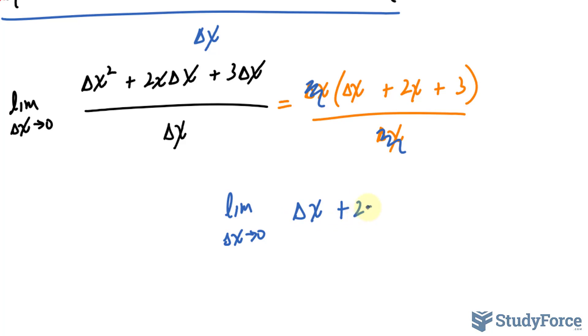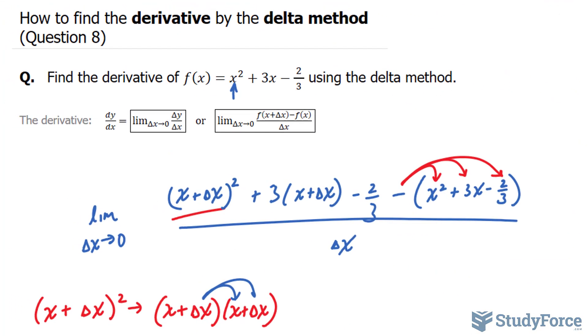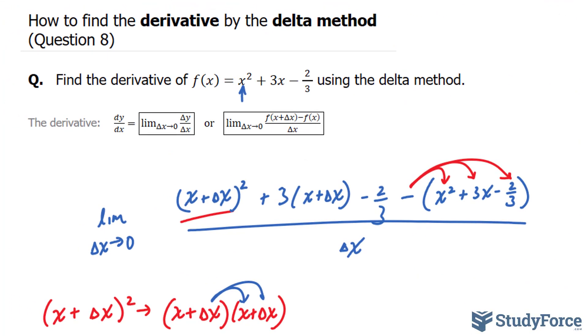Let me rewrite this for clarity. Setting delta x equal to 0 makes this go away. We've taken our limit and our derivative is 2x plus 3. And there you have it. Another example on how to use the delta method to find the derivative. If you have any questions, please use your website listed in the description below. Thanks for watching.